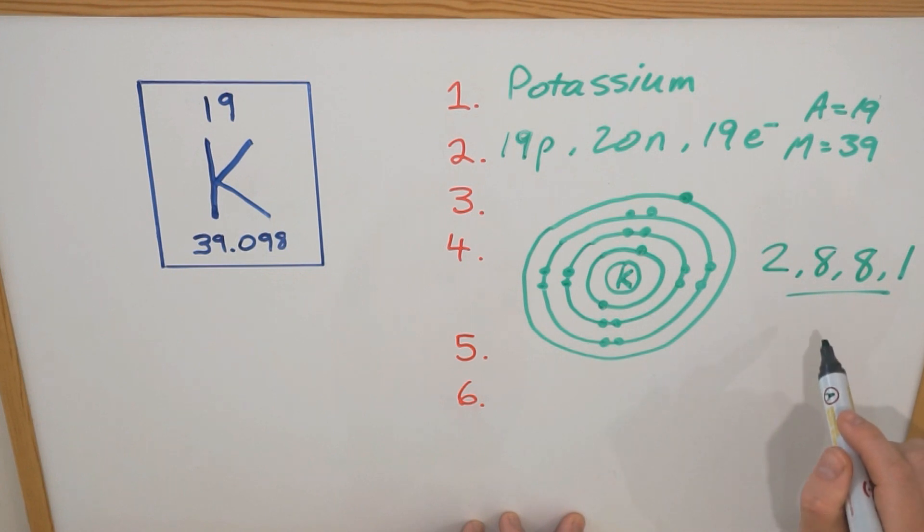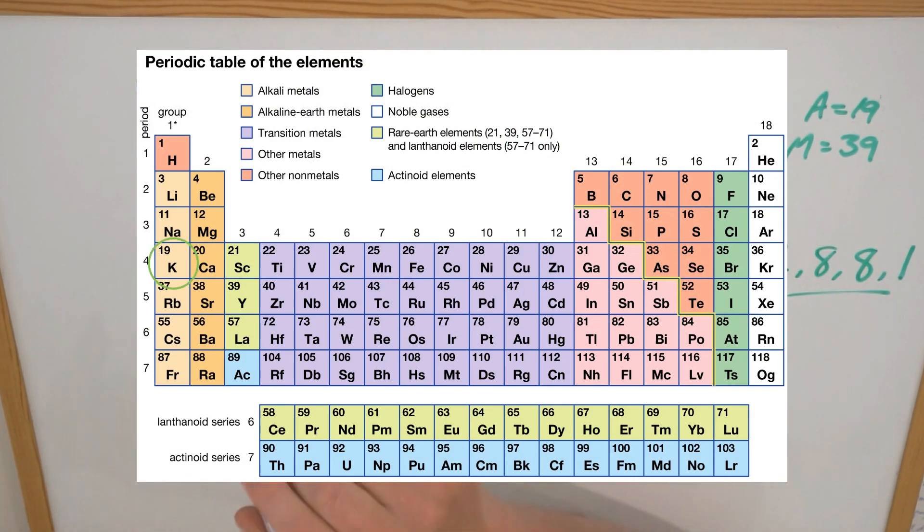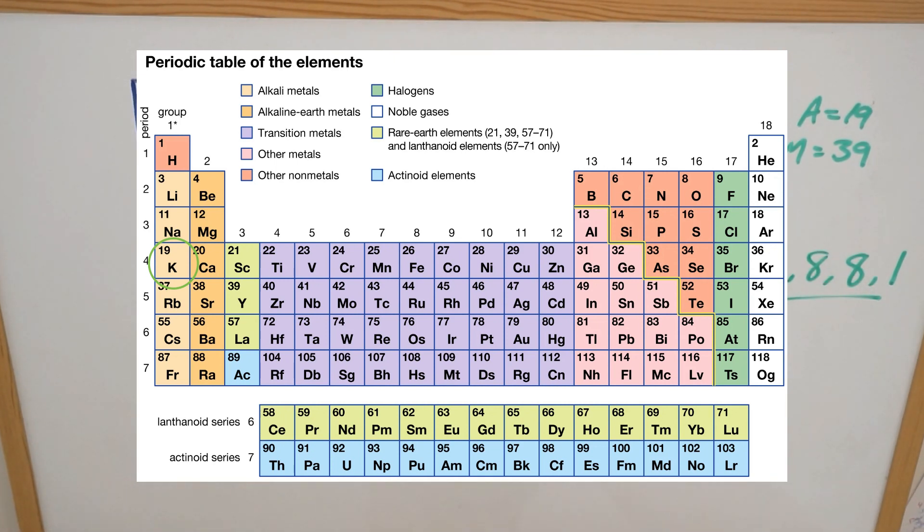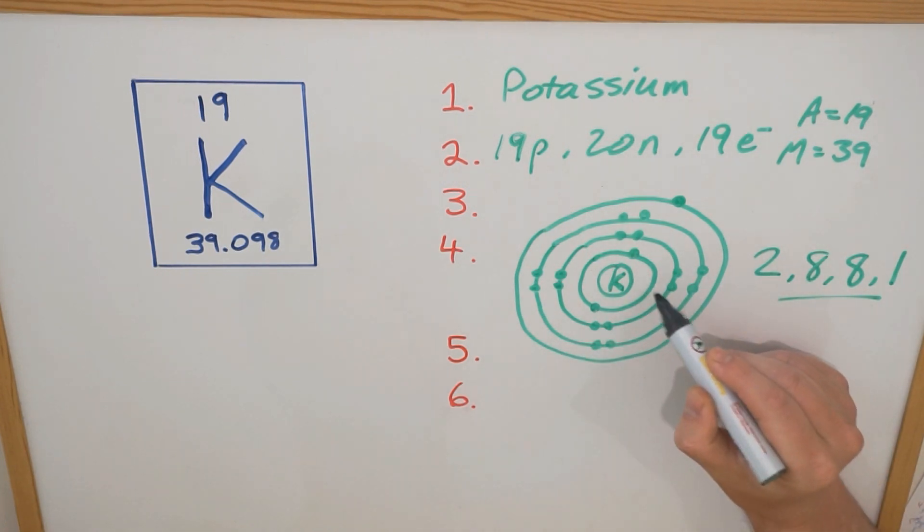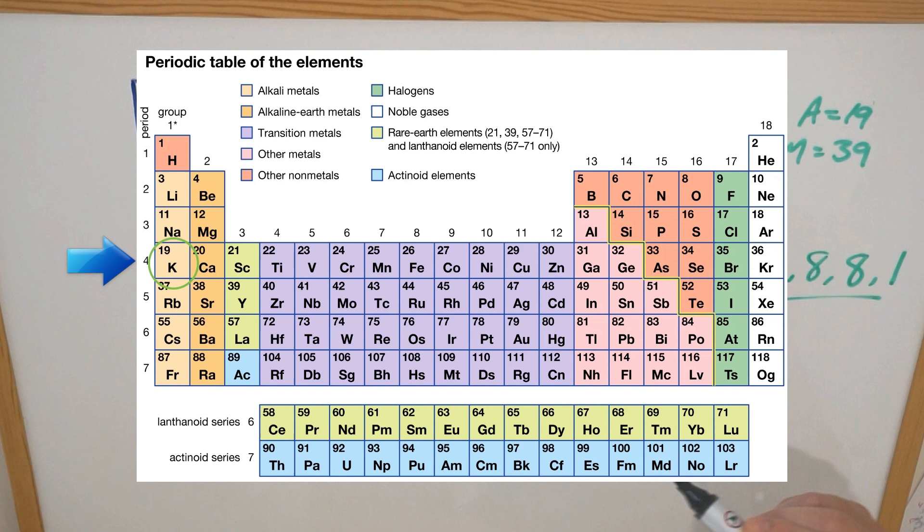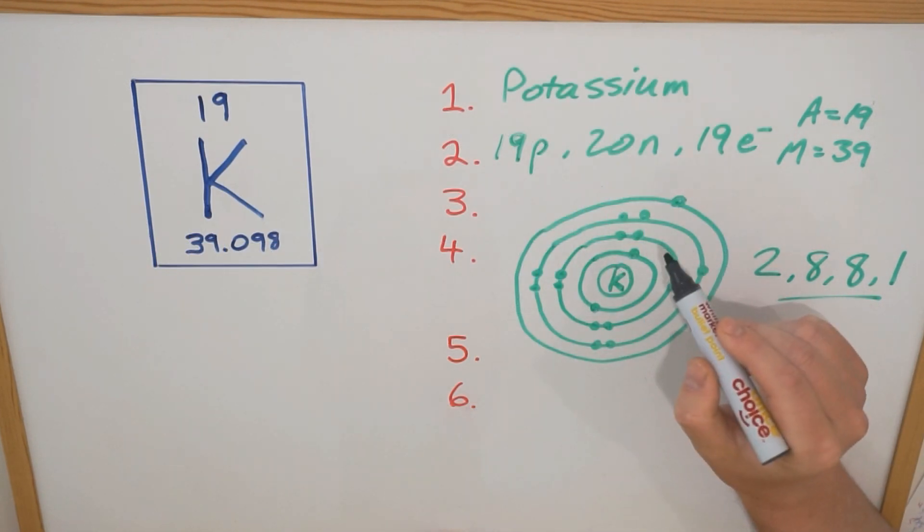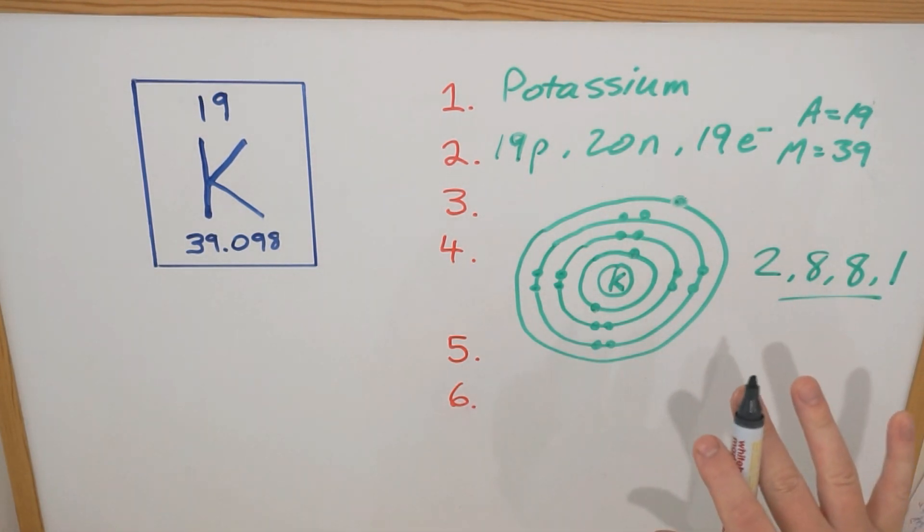But another way that you can determine that is by looking at the periodic table and look at where the element sits in that table. In this case, potassium sits in the first group and the fourth period. The period tells you how many shells there are, and because it's in the fourth period, that tells us that it has four shells. And if we look at the diagram - one, two, three, four. The fact that it's in the first group tells us that it's got one electron in its outermost shell or its valence shell. So we can determine the configuration based on the diagram or simply based on where it is in the periodic table.